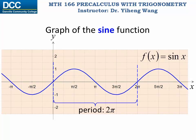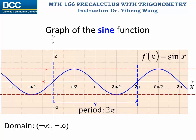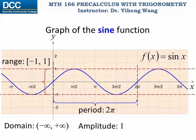The domain for the sine function includes all real numbers from negative infinity to positive infinity. The sine function value is always between negative one and positive one, and that is the range of the sine function — negative one to positive one, including both ends. The total height of the sine function is two, and half of that is known as the amplitude. So the amplitude of this sine function is one.